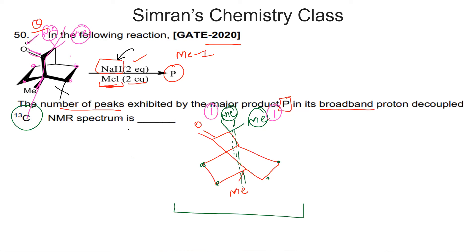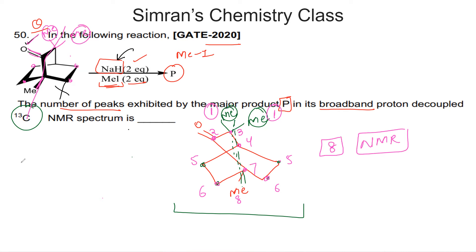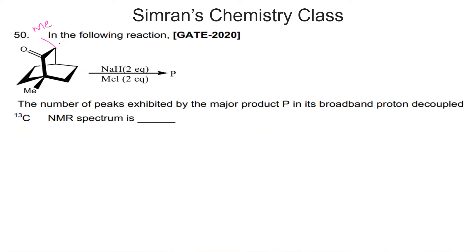Counting the unique carbons: carbon 2, carbon 3, carbon 4, both carbons at position 5 (equivalent), carbon 6, carbon 7, and carbon 8 — giving a total of eight signals in the 13C NMR spectrum. The correct answer is eight. Let's move on to the next question.